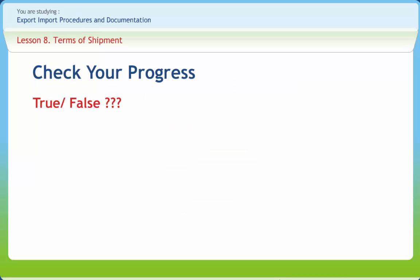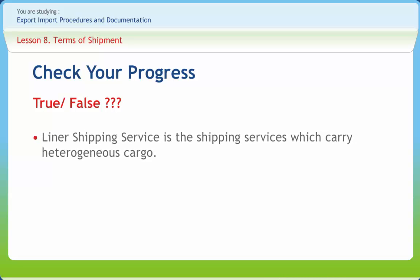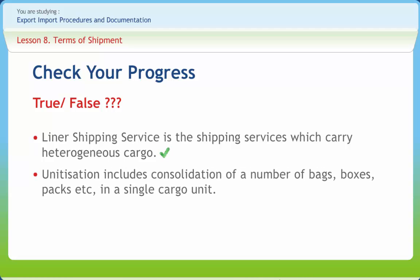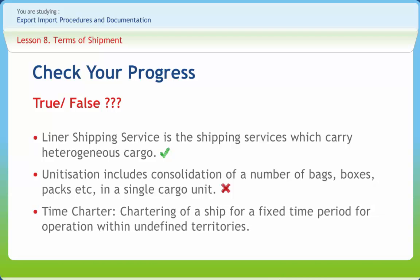Tell us if this is right or wrong. Liner shipping service is the shipping service which carries heterogeneous cargo — Right. Unitization includes consolidation of a number of bags, boxes, packs, etc. in a single cargo unit — Wrong. Time charter includes chartering of a ship for a fixed time period for operation within undefined territories — Wrong.